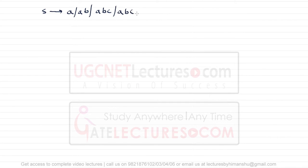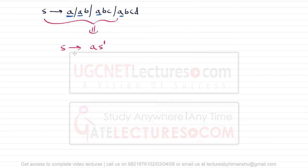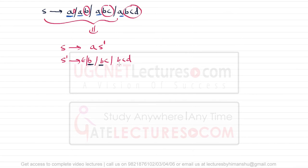Consider another example: S → a | ab | abc | abcd. This obviously has left factoring since the first symbol 'a' is the same in all productions. After one level of elimination: S → aS′, and S′ → ε | b | bc | bcd. However, S′ still has left factoring since 'b' is a common prefix.